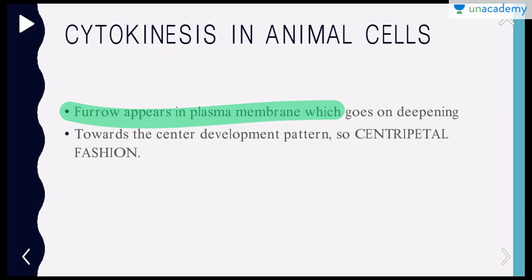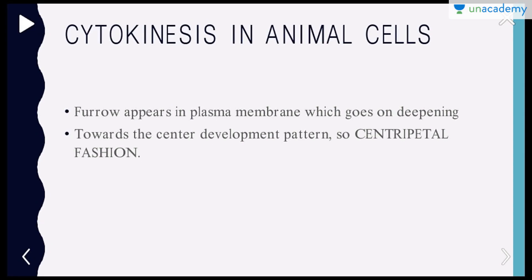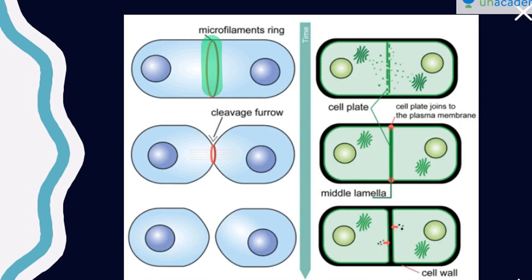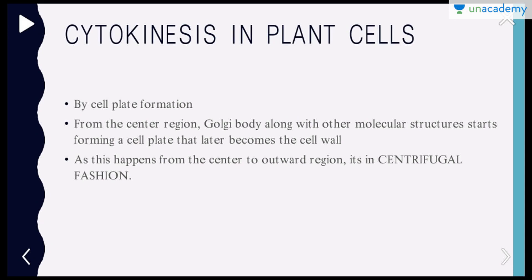The furrow appears in the plasma membrane — this structure we call a furrow, clear? So the furrow appears in the plasma membrane and goes on deepening. You can see the furrow comes from the outer side moving inward. Two key terms here: centripetal means toward the center, and centrifugal means away from the center. In animal cells the furrow moves toward the center, so it is a centripetal fashion of cytokinesis.